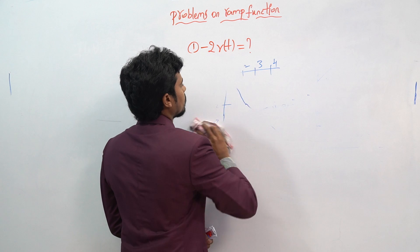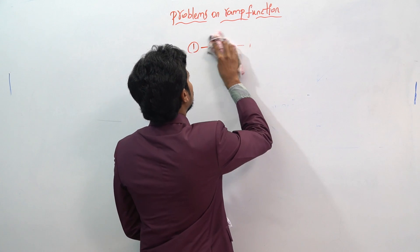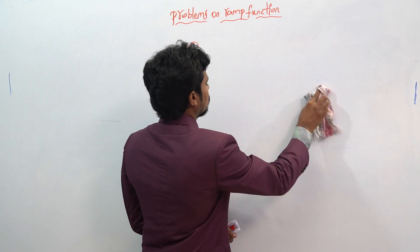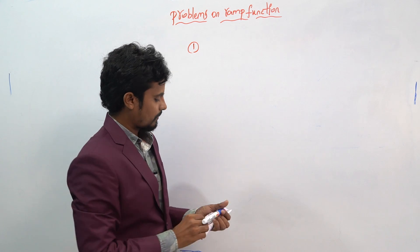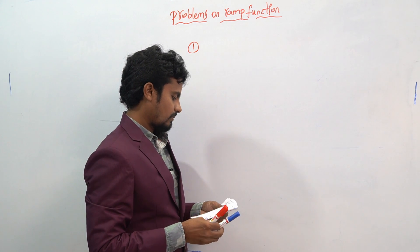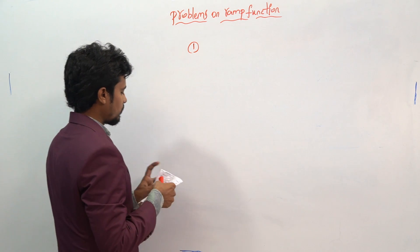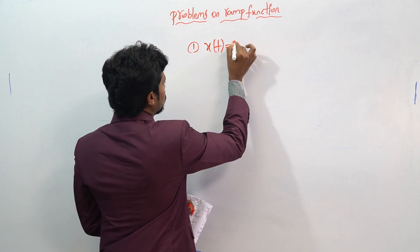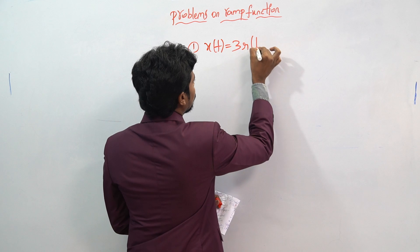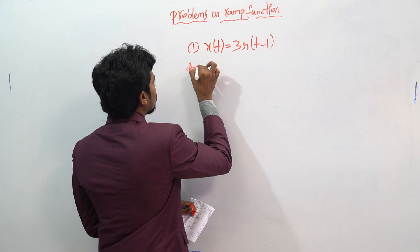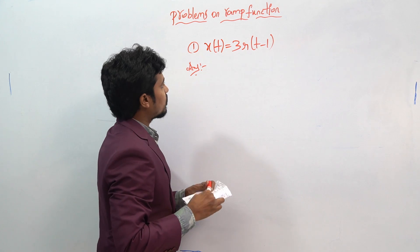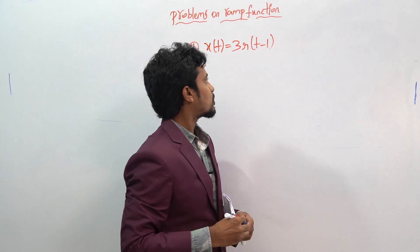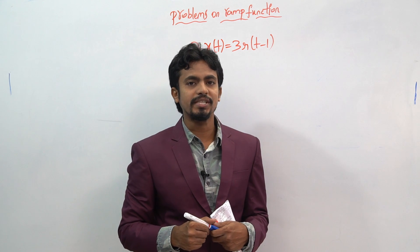Next, x(t) is equal to 3 into r(t minus 1). You can observe this is a shifted version. It cannot start at t equal to 0; it will start at t equal to 1.